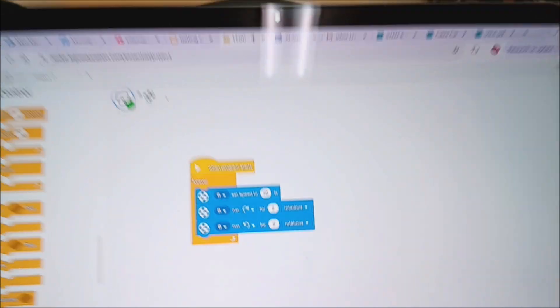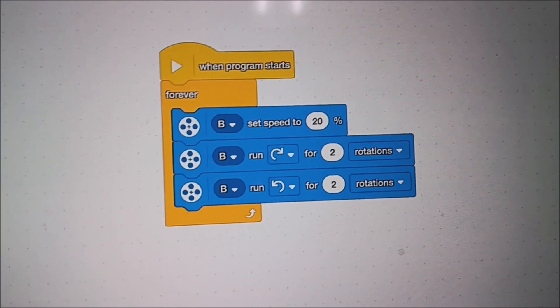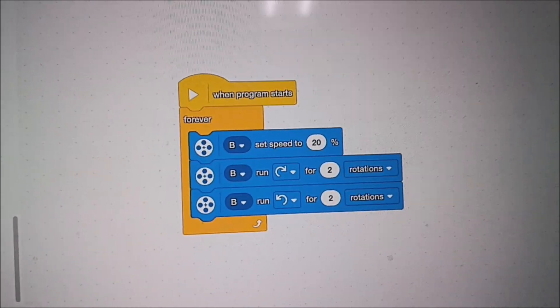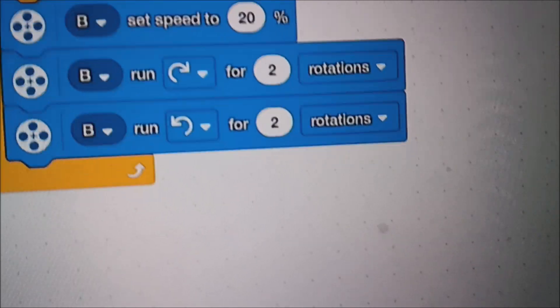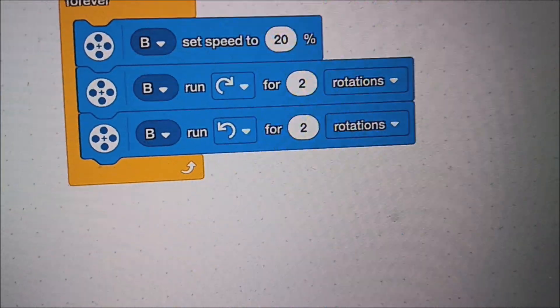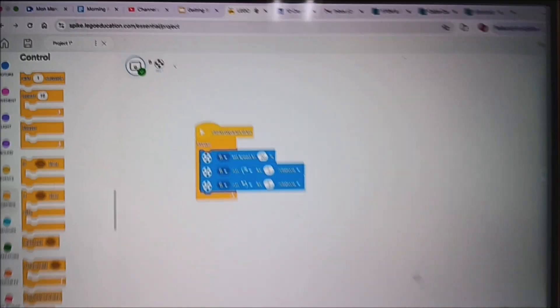So let me go ahead and show you the program here. Students are just going to have to figure out how do we make this go on forever, because that right there can just make it go over one side and back. But when they do the forever block, they can now see that this can just continue to go on forever.